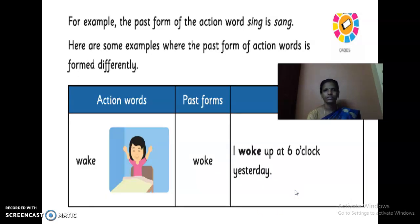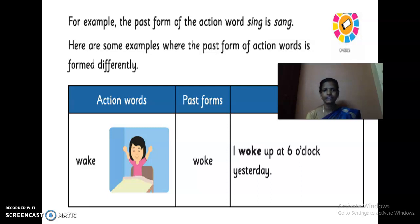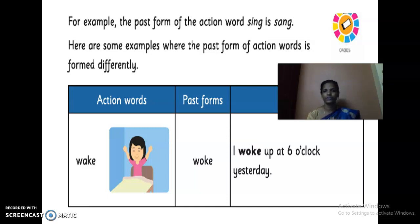They have given a few examples of past tense of the verbs in your book — the Studio book. Just take your book. For example, the past form of the action word 'sing' is 'sang.' This is also something we already discussed in our last session. So for 'sing,' you should not add 'ed' — you have to write 'sang.' That is called an irregular verb. Here are some examples where the past form of the action word is formed differently. Some present tense verbs we should not add 'ed' to — those verbs are called irregular verbs.